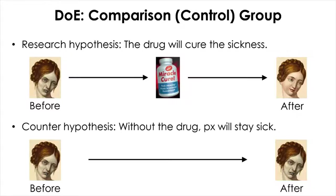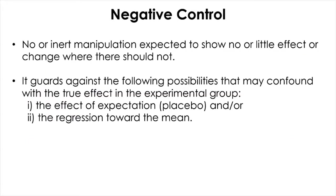The selection and use of proper controls are critical to ensure whether the experimental results are valid. There are two types of control groups: positive or negative. The negative control group shown in the counter hypothesis involves no manipulation, or inert manipulation, expected to show no or little effect. The negative control can guard against the effect of expectation and regression toward the mean that may confound with the true effect in the experimental group.